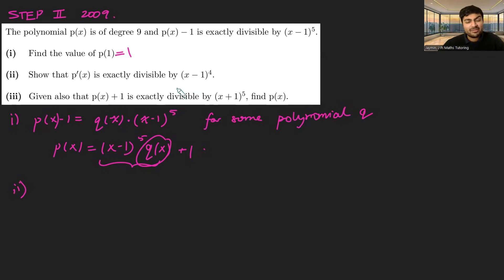Show that p'(x) is exactly divisible by (x-1)^4. We're just going to use the product rule here, pretty intuitive. 5 times (x-1)^4 times q(x) plus (x-1)^5 times q'(x). And clearly both those things have a factor of (x-1)^4. That's a pretty straightforward question for a STEP so far.